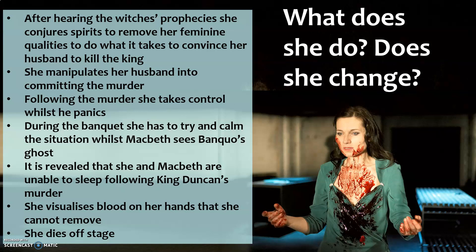She takes control and seems to be the stronger of the two characters. Further on, there's a banquet scene where Macbeth sees Banquo's ghost — because he's had Banquo murdered — and Lady Macbeth takes control of the situation, trying to calm everything down and convince people it's nothing to worry about while Macbeth completely loses control. That's really one of her final moments of strength, in Act 3, Scene 4. It's then revealed that she and Macbeth are struggling to sleep — they are, more or less in the play's words, 'shaken nightly' — almost nightmares happening every single night.